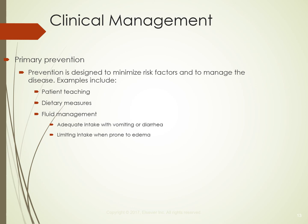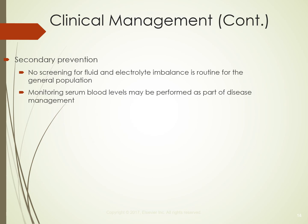Primary prevention to minimize risk factors includes patient teaching about fluids and electrolytes and dietary measures. Fluid management involves adequate intake especially with vomiting or diarrhea, and limiting intake when prone to edema, along with limiting salt. Secondary prevention has no formal screening for fluid and electrolyte imbalance, but blood work may be drawn as part of evaluating a disease or illness.